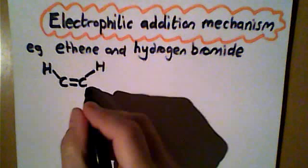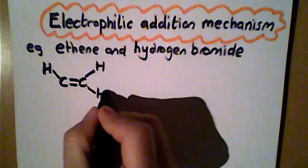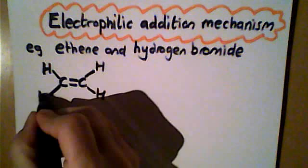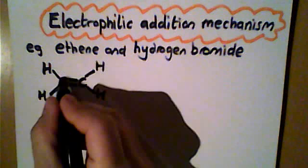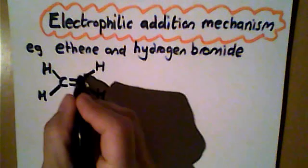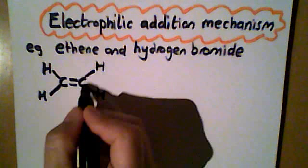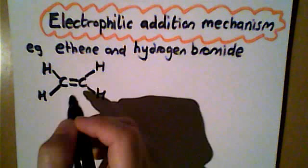If we look closely at the alkenes, they all have something in common: this carbon double bond carbon. So we can consider this area here to be electron rich.